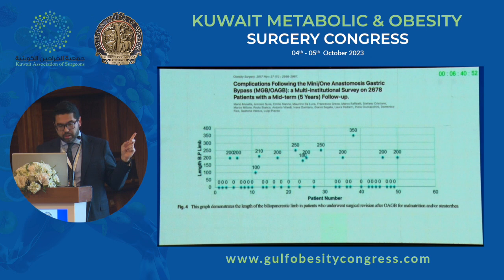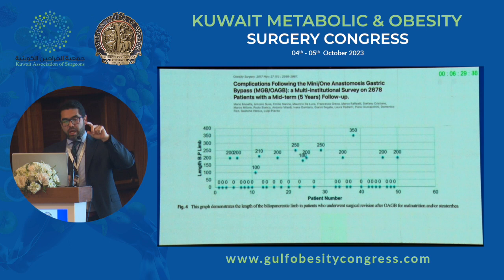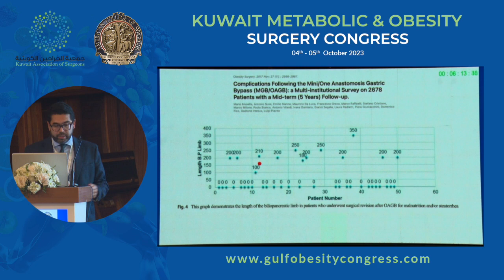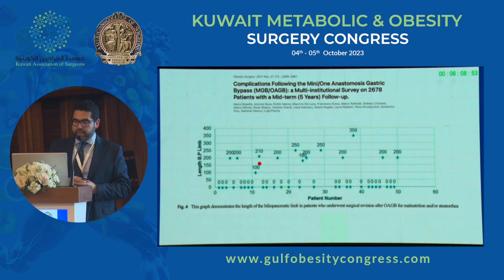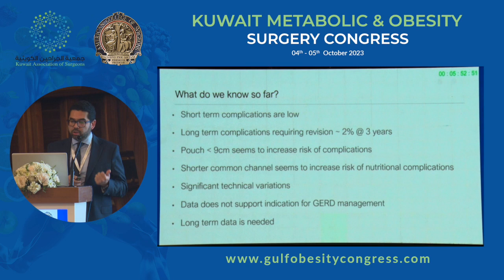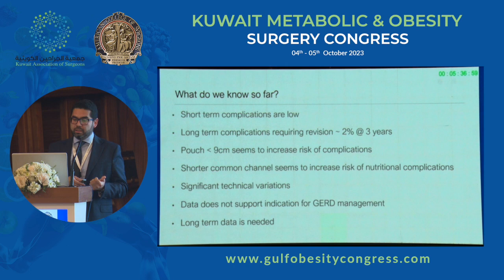Going back to the point about standardizing the operation, in this study looking at patients developing nutritional complications requiring revision, limb lengths were measured both preoperatively and postoperatively. A lot of these patients have afferent limbs of about 200 centimeters. There are outliers — one patient with a 350 centimeter biliopancreatic limb — but we're also seeing patients with shorter biliopancreatic limbs of 100 and 180 centimeters requiring revision. The long-term complications requiring revision in some of the larger series is not negligible — about a 2% need for revisions at three years.